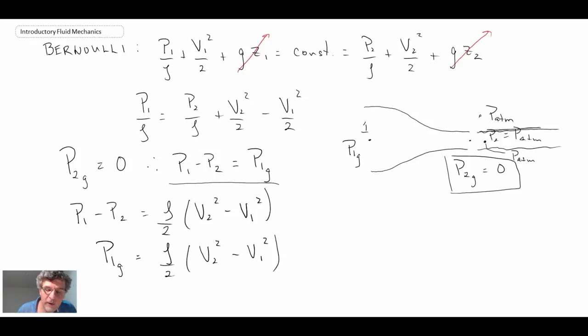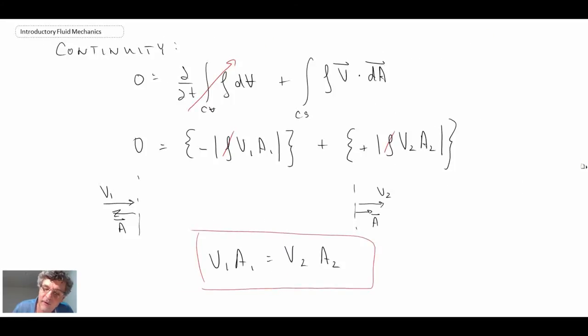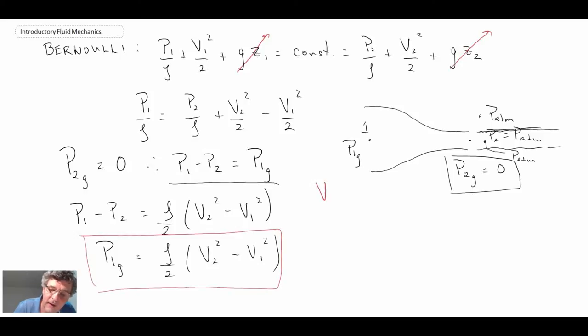We know that P1 gauge equals ρ/2 times the velocity difference. We have this term now, but it's not in terms of volumetric flow rate, which we're after. From continuity, we had v1·a1 = v2·a2, so v2 is v1 times a1/a2. We'll make that substitution to express this in terms of v1.